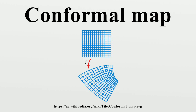In mathematics, a conformal map is a function that preserves angles locally. In the most common case, the function has a domain and an image in the complex plane.